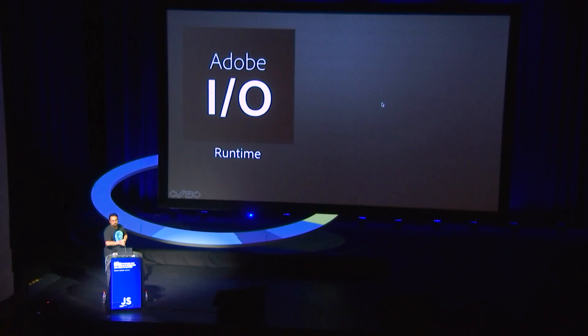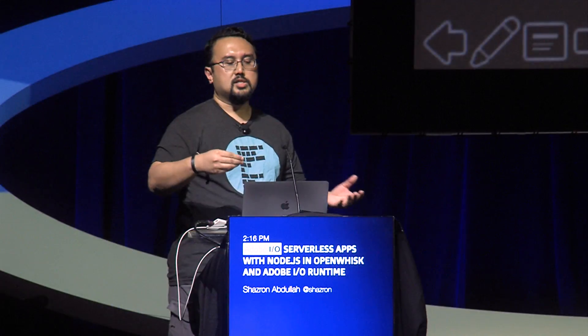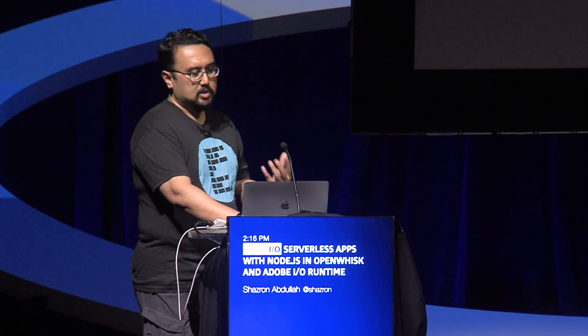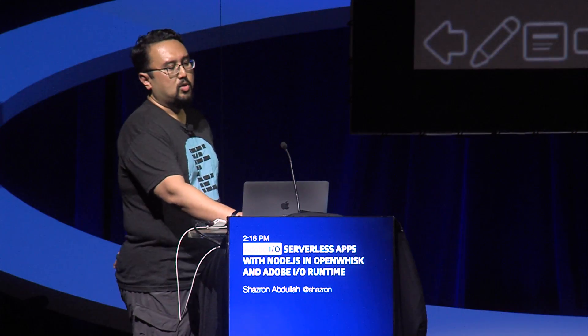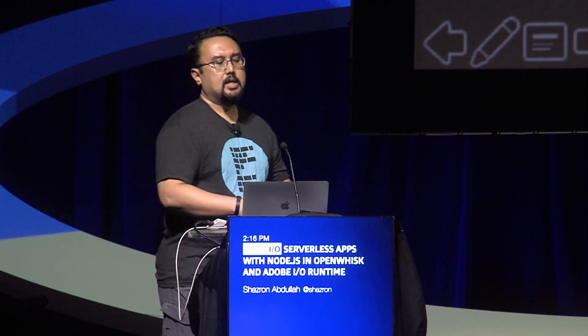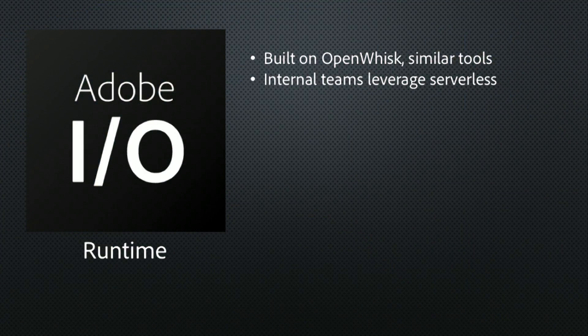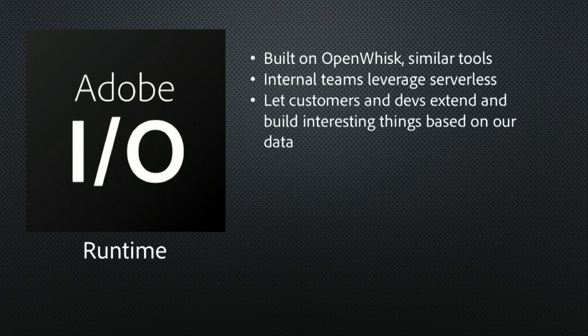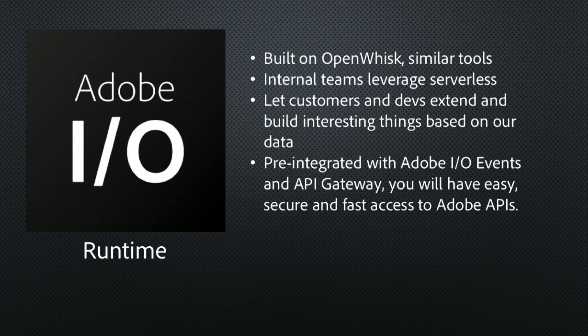The final part I want to talk about is Adobe I.O. Runtime. Adobe I.O. Runtime is based on OpenWhisk — just like IBM Cloud Functions is based on OpenWhisk, like Adobe PhoneGap or Ionic is based on Apache Cordova, like a web browser has its engine. Adobe I.O. Runtime's engine is OpenWhisk. It helps our internal teams leverage serverless for functions within the enterprise, and it lets our customers and developers extend and build interesting things based on our data. Adobe is known for creative products, but also for analytics and marketing cloud. It's pre-integrated with Adobe I.O. events and API Gateway, giving easy and secure access to all Adobe APIs. If you go to adobe.io, you'll see all the APIs available to all users.